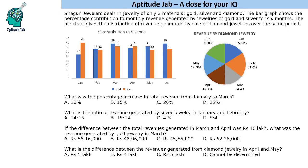Hello everyone, welcome to Aptitude Jab. This is a chart-based DI set involving a bar graph and a pie chart. It says that Shagun Jewellers deal in jewellery of only three materials: gold, silver and diamond. The bar graph shows the percentage contribution to monthly revenue generated by jewelleries of gold and silver for six months. The pie chart gives the distribution of revenue generated by sale of diamond jewelleries over the same period.